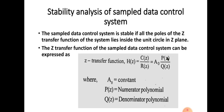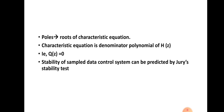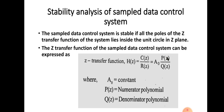We will be given a Z transfer function of the sample data control system, expressed in the form H(Z) = N(Z) / D(Z). That can be expressed as A0 · P(Z) / Q(Z), where A0 is a constant, P(Z) is the numerator polynomial, and Q(Z) is the denominator polynomial. The characteristic equation is the denominator polynomial, Q(Z) = 0, whose roots are the poles. Those poles should lie inside the unity circle — that is the condition for stability.